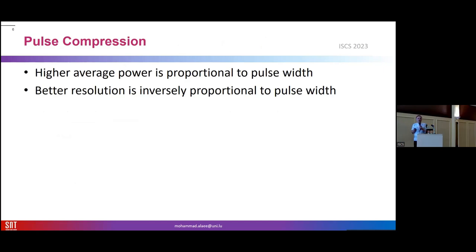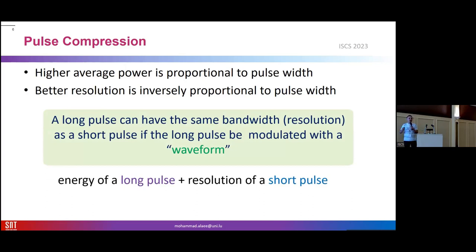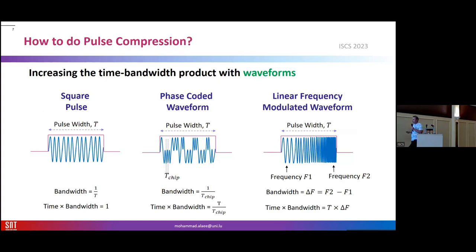What is pulse compression? If we use some modulation inside the waveform, we may have benefits: we can have the advantage of transmitting a long pulse while achieving the resolution of a short pulse. This is the effect of pulse compression. If we are using a simple pulse, the bandwidth of the radar is related to the pulse duration and the time-bandwidth product is approximately equal to one.